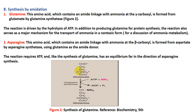Asparagine is formed from aspartate by forming an amine linkage with ammonia at the beta carboxyl group. This reaction requires adenosine triphosphate, which is hydrolyzed to adenosine diphosphate and inorganic phosphate.